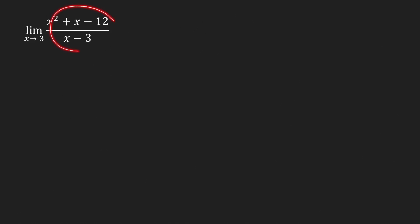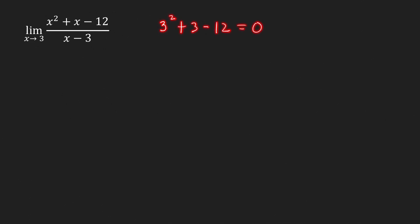Next, let's find the limit of this rational function as x approaches 3. We can immediately see the denominator approaches 0, so we cannot use the quotient rule. The limit of the numerator is 3² + 3 - 12, which also equals 0. So we have a limit of the form 0/0. The common mistake is thinking we can always do direct substitution — when you get 0/0, there is a common factor between numerator and denominator, which is x minus a, in this case x minus 3.